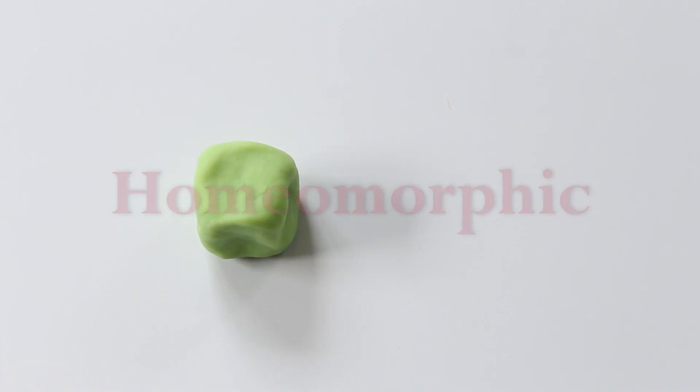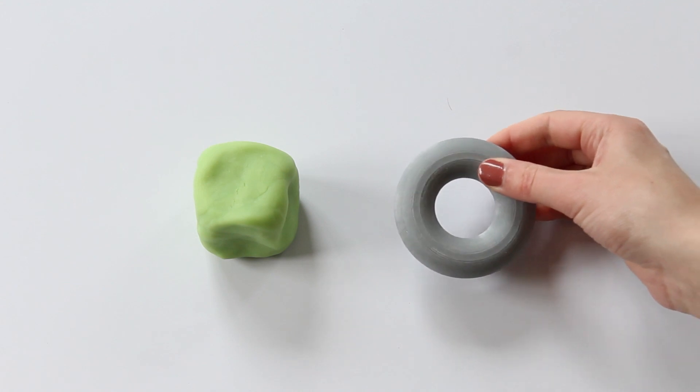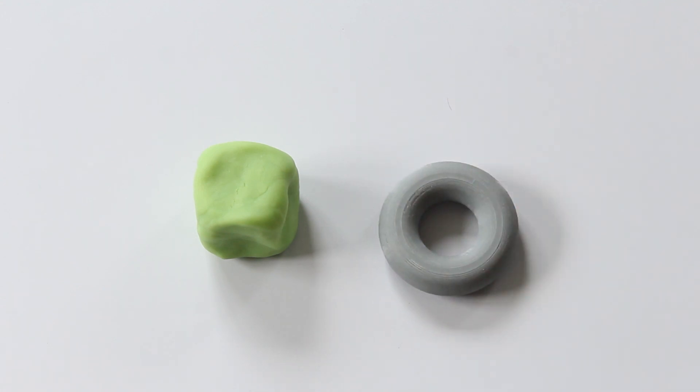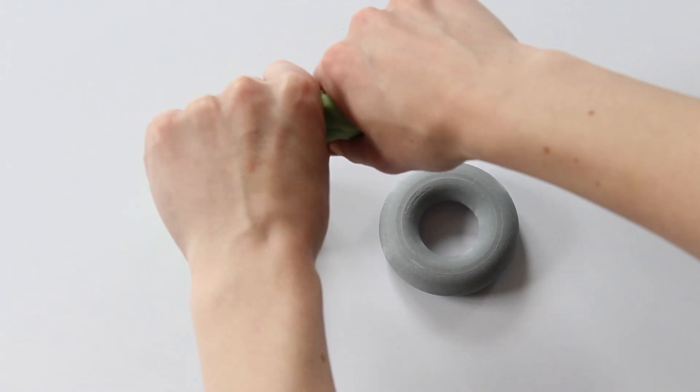Now consider a torus, a donut shape. I claim that I can never reach the torus from the sphere by continuous deformation.